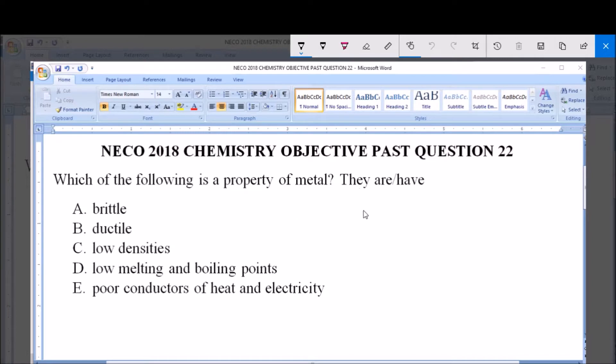Now the property of metal includes, that's the physical property of metal now. Number one: high melting and boiling points.